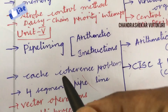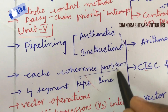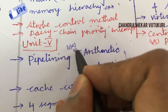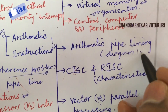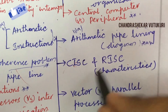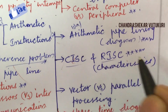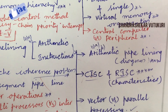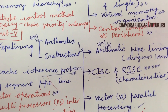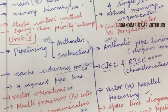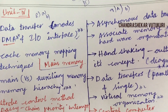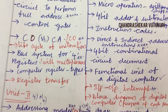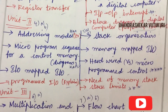For the fifth unit, very important questions include pipelining arithmetic and instructions, cache coherence problems in a 4-segment pipeline, vector operations, and multi-processor versus inter-process communication — these appear in 10A and 10B and as short questions. Arithmetic pipelining diagram is the top question for 11A. CISC and RISC characteristics is also a top question and short question. Vector versus parallel processing and space-time diagrams for a four-segment pipeline may appear in 11B. You need to work out arithmetic operation programs and diagrams neatly, and a guide on how to write a theory paper is uploaded in this channel.